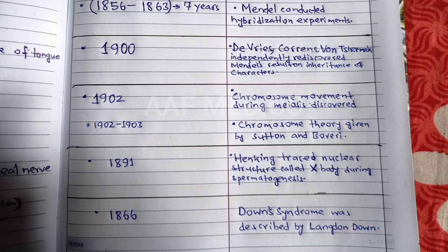The next date was 1902. In the year, chromosome movement during meiosis was discovered. Which type? It is meiosis division.